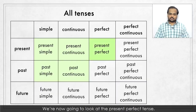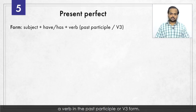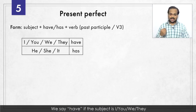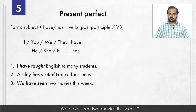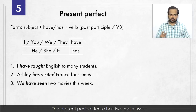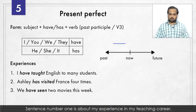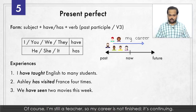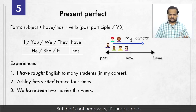We're now going to look at the present perfect tense. We make it with a subject, plus have or has, plus a verb in the past participle or V3 form. We say 'have' if the subject is I, you, we, or they, and 'has' if the subject is he, she, or it. For example: I have taught English to many students. Ashley has visited France four times. We have seen two movies this week. These sentences show the first use – to talk about experiences. I'm still a teacher, so my career is not finished; it's continuing.